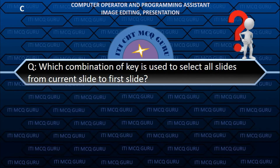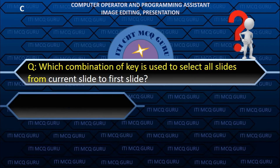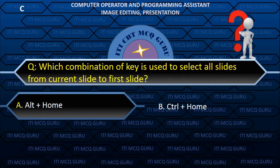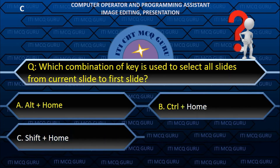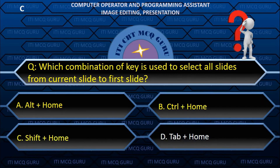Which combination of keys is used to select all slides from the current slide to the first slide? C. Shift plus Home.